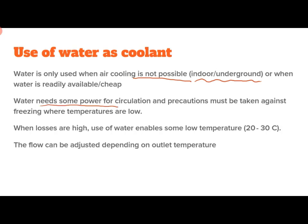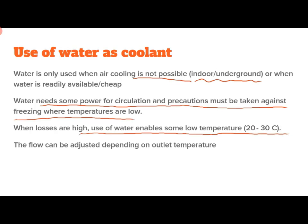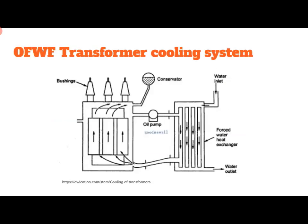The outer system will use water in some cases — for indoor or underground systems where adequate air cooling is not possible, and also where water is readily available and cheap, because the water cooling system has high efficiency. Water needs some power for circulation, and precautions must be taken against freezing in pipes where temperatures are low. When losses are high, use of water enables very low temperatures such as 20 to 30 degrees centigrade. The flow can be adjusted depending on the outlet temperature and cooling requirement.